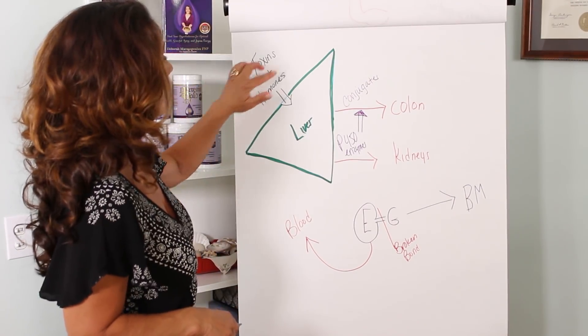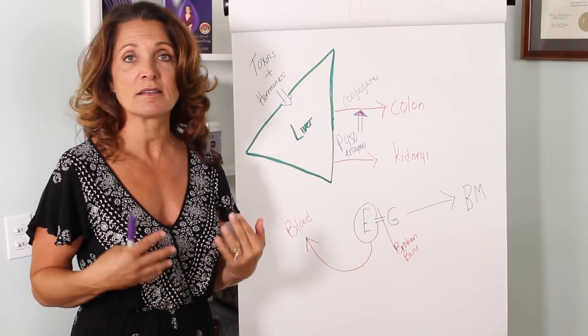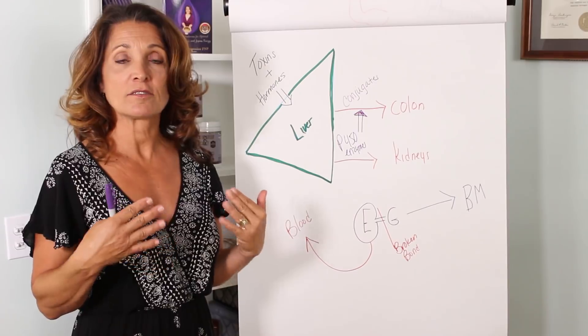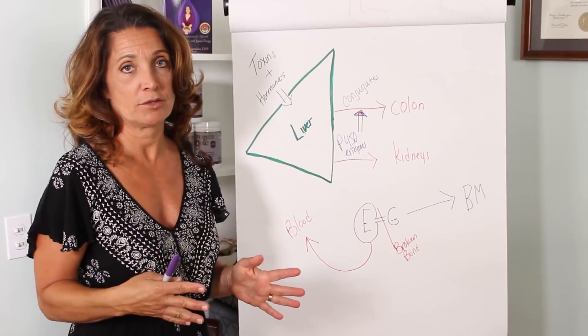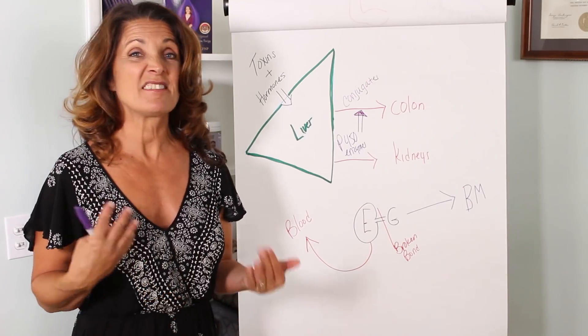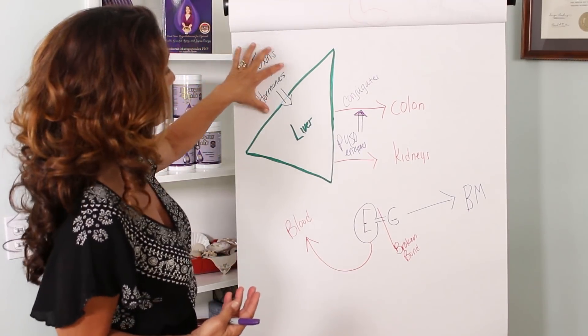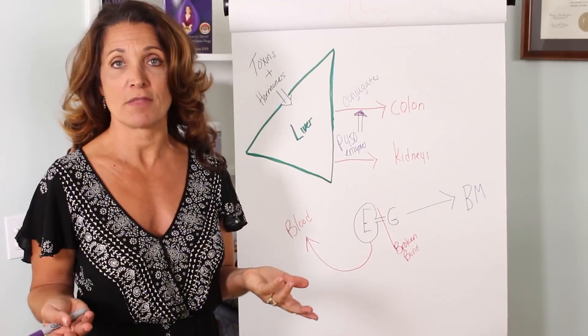So first of all, all toxins, pesticides, poisons, drugs, all toxins go through the liver. But so do your hormones and other biochemistry that you make that's still floating around in the bloodstream that your body doesn't need anymore. So they go into the liver to be detoxified. In other words, to get rid of them.